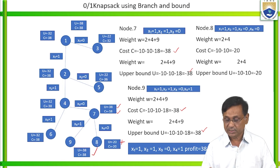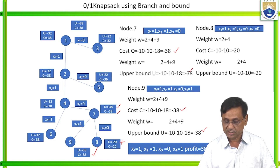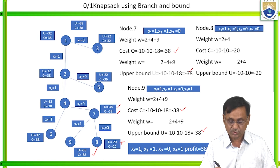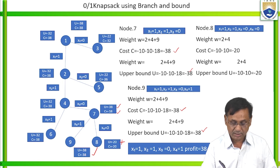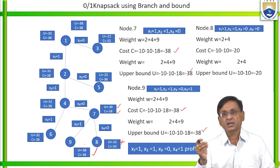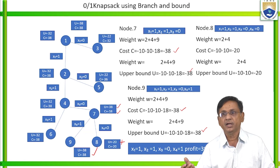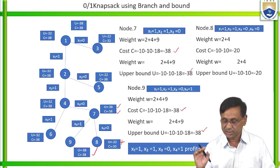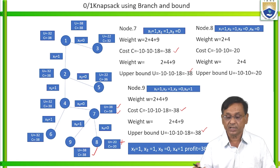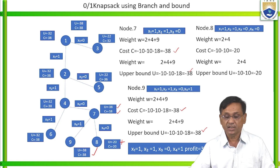This is the final solution for Problem 1: first object is included, second object is included, third object is not included, fourth object is included, with a profit of 38. Upper bound = -38, lower bound (cost) = -38. Since we converted the maximization problem into minimization by multiplying profits by -1, we multiply -38 by -1 to get profit = 38. This is the solution using the least cost branch and bound technique.